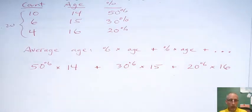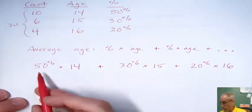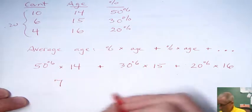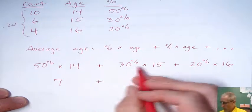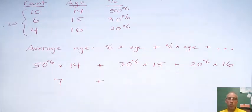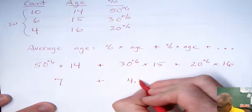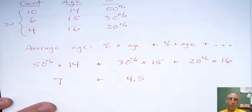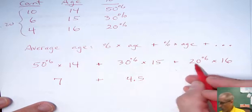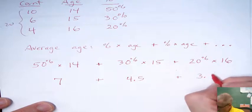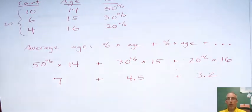Now you could grab a calculator at this point, although some of these numbers are nice enough you could do it by hand. For example, 50% is another name for half. Half of 14 would be 7. 30% of 15 is 4.5. And 20%, which is another name for 1 fifth, of 16 is 3.2. Again, any calculator will find these numbers for you.